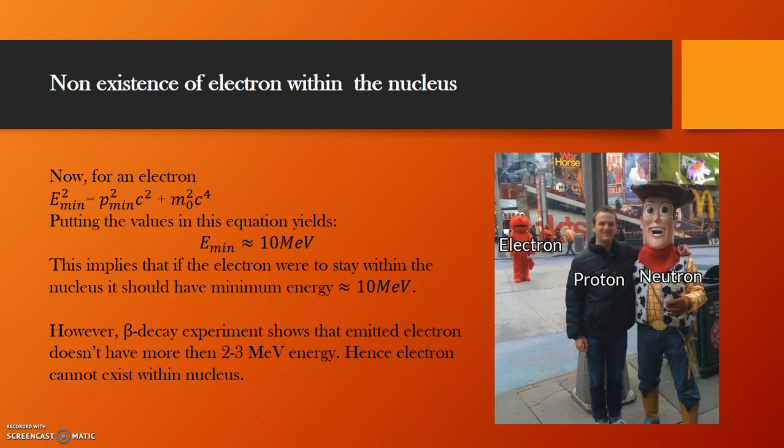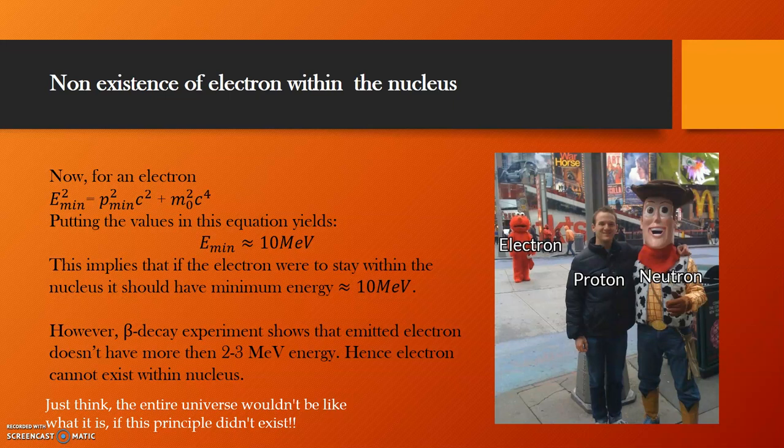Isn't this picture strong enough to let us know that however the electron wants to stay with the proton and the neutron, it has to stay away from them. Now, just think. This entire universe consists of atoms with electrons and nuclei. So, the entire universe wouldn't be like this, what it is now, without this principle. So, can you understand the significance of this Heisenberg uncertainty principle now?